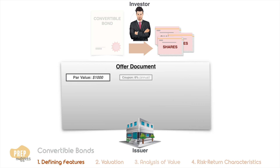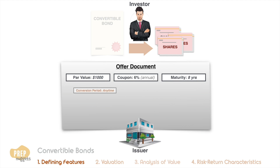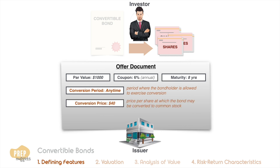Other than the usual coupon rate and frequency and maturity date of the bond, the offer document will also state the following. The conversion period is the specified valid period where the bondholder is allowed to exercise the conversion. The conversion price is the price per share at which the bond may be converted to common stock. For illustration, let us set the conversion price at $40.